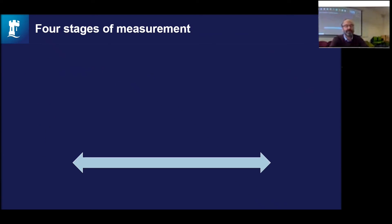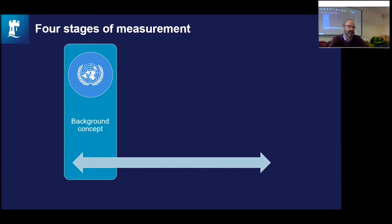The four stages of measurement come from a wonderful piece by Adcock and Collier in the American Political Science Review, which asks how do you convert qualitative concepts into quantitative measures. They start with the background concept. Here at the University of Nottingham law school, law gives us a really good starting point — it tells us about the core content of human rights and different practices of modern slavery: exploitation, forced labor, whether using ILO frameworks or UN human rights frameworks.